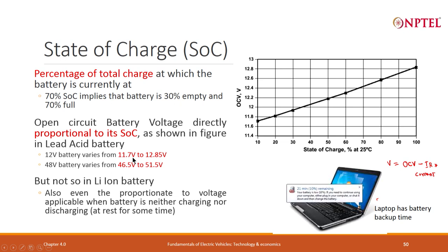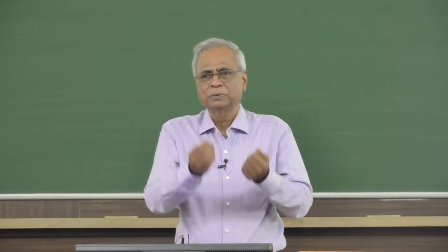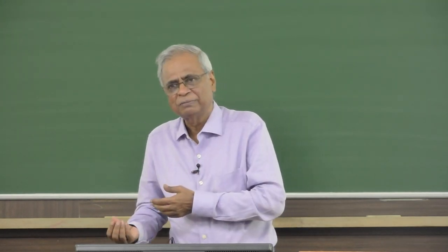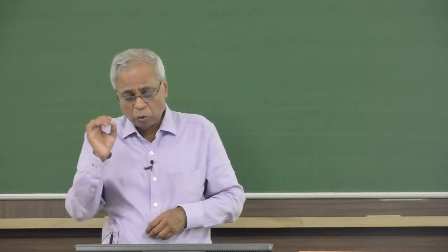For a 12-volt battery, for example, open circuit voltage may vary from 11.7 volts to 12.85 volts. 12.85 volts means it is nearly 100 percent state of charge. Similarly, for a 48-volt battery, a full battery may be 51.5 volts; when it is close to 10 percent, it is 46.5 volts. If it is part of a battery pack, there will be a BMS which will measure the voltage, convert it into numbers, store it, or even transmit it through a CAN interface that a battery may have.